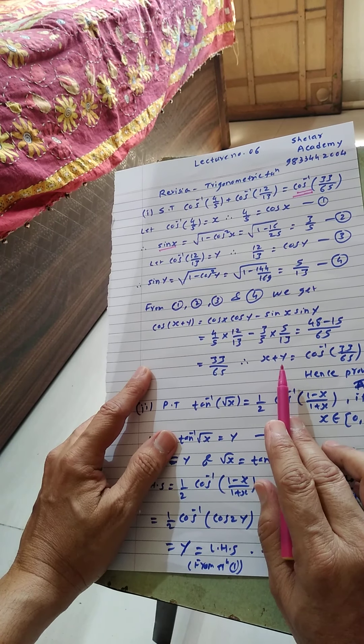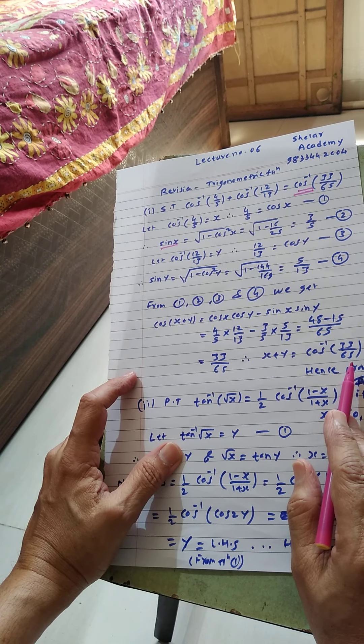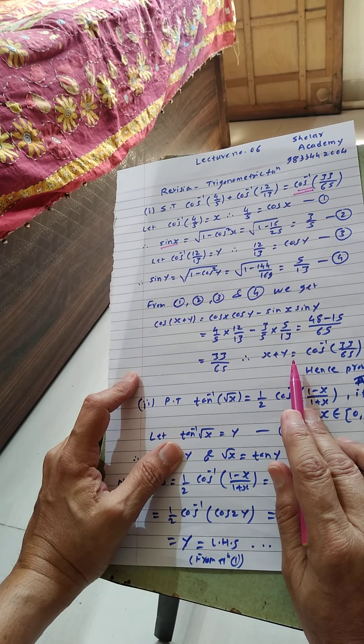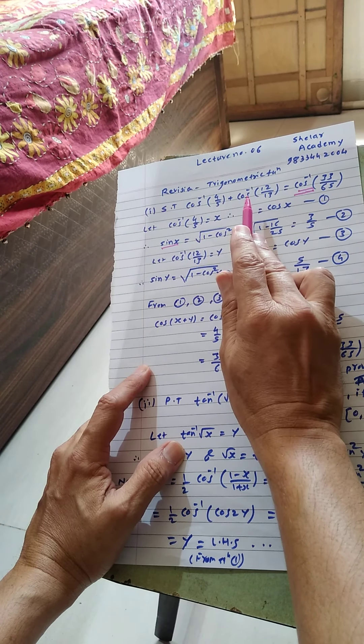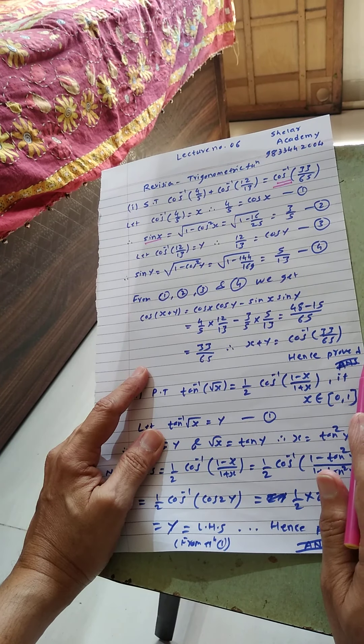Therefore x plus y is equal to cos inverse of 33 by 65, and x plus y is cos inverse 4 by 5 plus cos inverse 12 by 13, and hence proved, that is RHS.